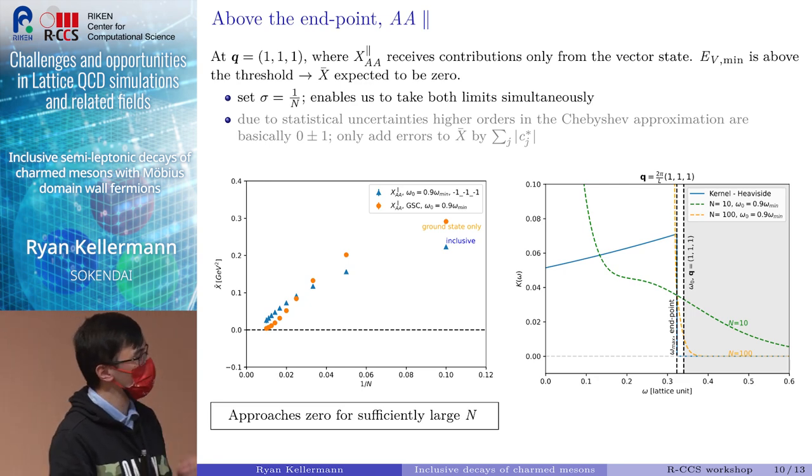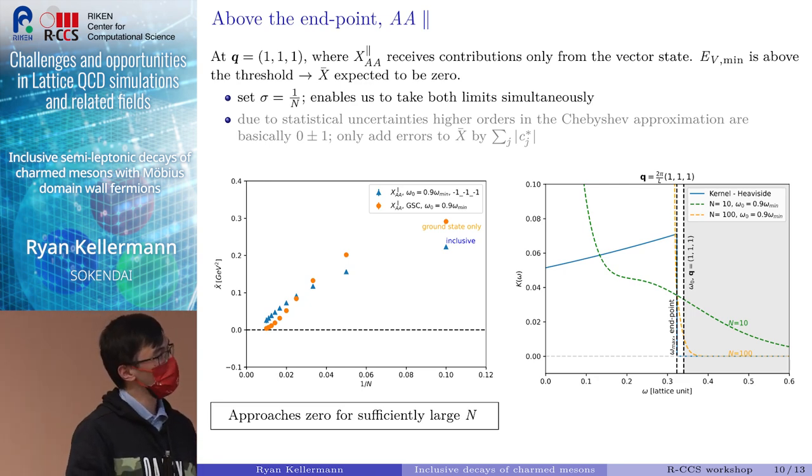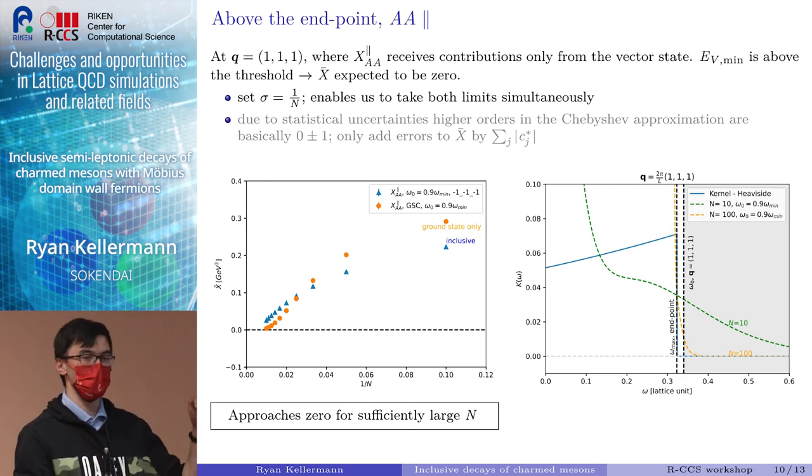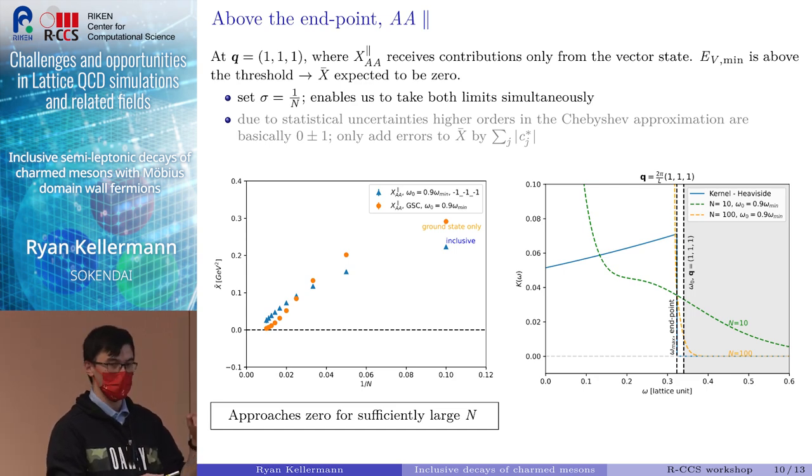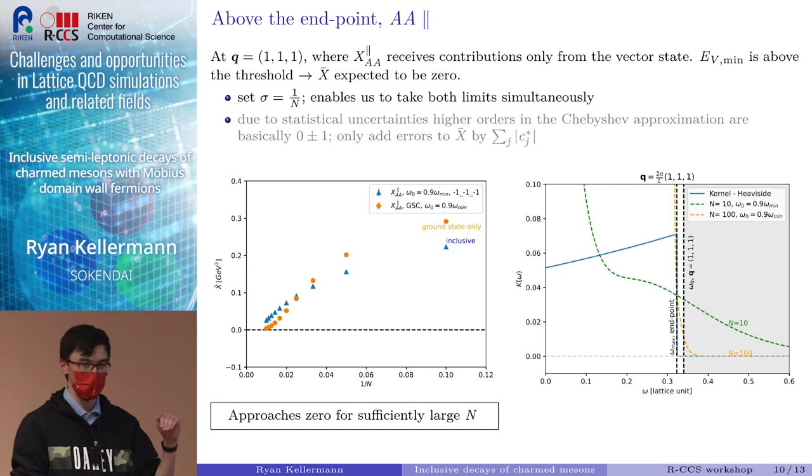This is due to the very specific case of X_AA parallel, which is illustrated on the right-hand side. Here we show our kernel function, and in gray we have our integration area, which we choose from omega_0 to infinity. We see that for n equals 10, we are strongly overestimating the actual integral, which would be zero, and this is reflected in the inclusive data. But for n equals 100, the area at which we overestimate the integral becomes a lot smaller.